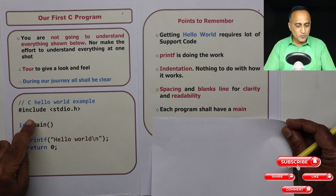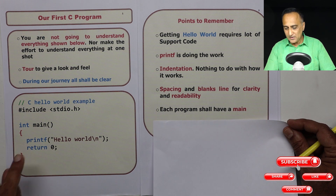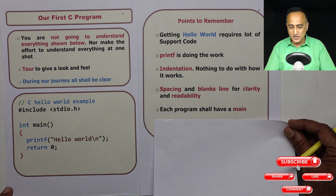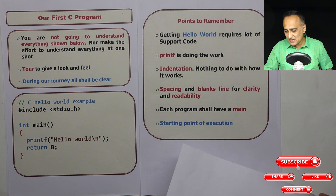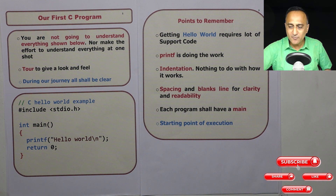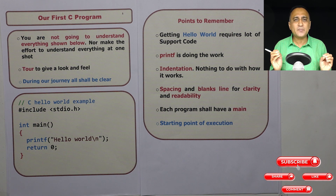Most importantly, every program should have at least one main, because main is the point where the execution starts to commence. From here it will start looking and start executing line by line. This is the reason why you need the main — as clearly stated, main is the starting point of execution. I hope with this you've got a tour of how a simple C program looks and how you go ahead and print Hello World.